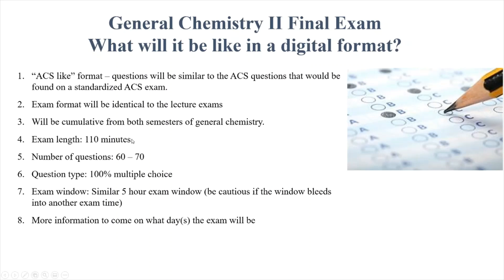The exam is cumulative from both semesters of general chemistry, and it really has to be because it's so difficult to separate second semester from first semester. You've gotten gas law questions, thermodynamic stuff, moles and stoichiometry in the second semester — all of that will be built in. Some topics unique to first semester that we don't explicitly review in second semester are chapters 7, 8, 9, and 10. Chapter 7 is quantum theory and Planck's constant, chapter 8 is periodic trends, chapter 9 is Lewis structures, and chapter 10 is VSEPR and molecular structure.